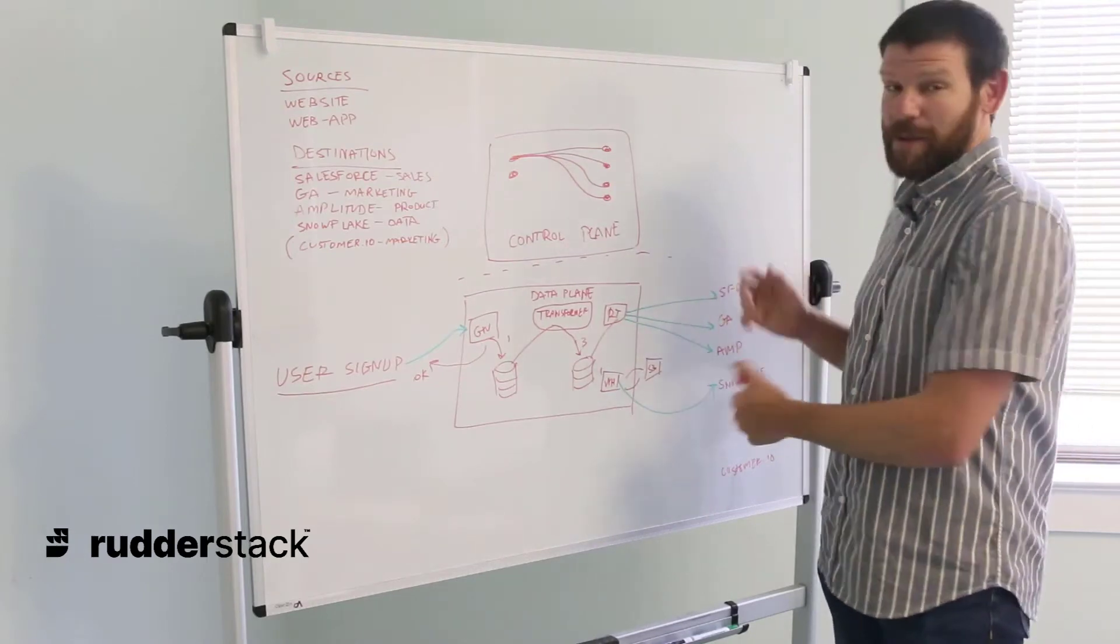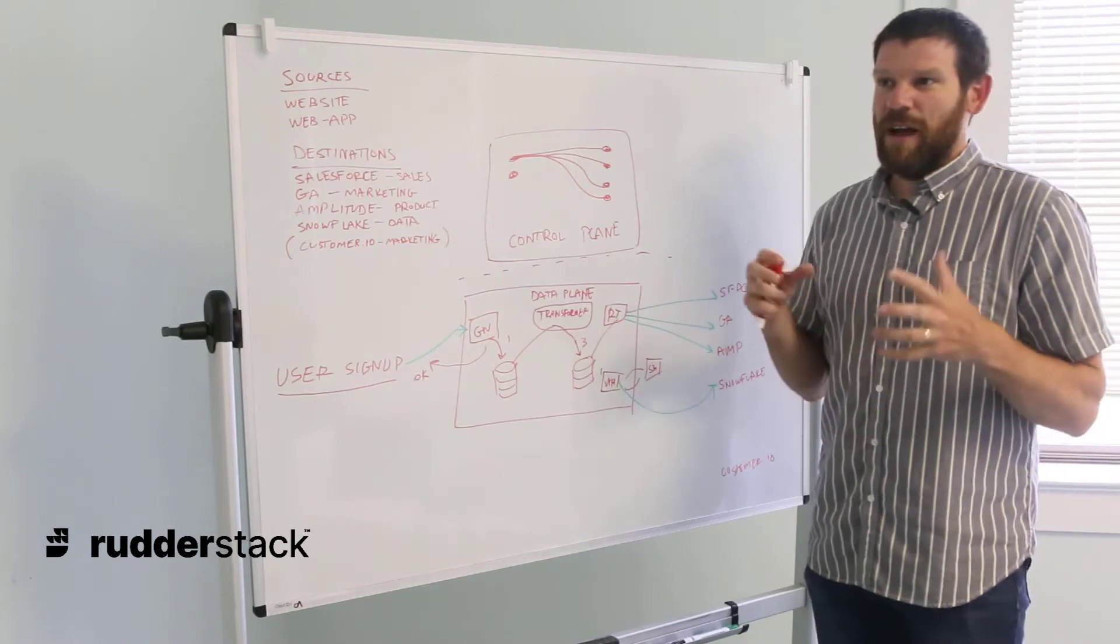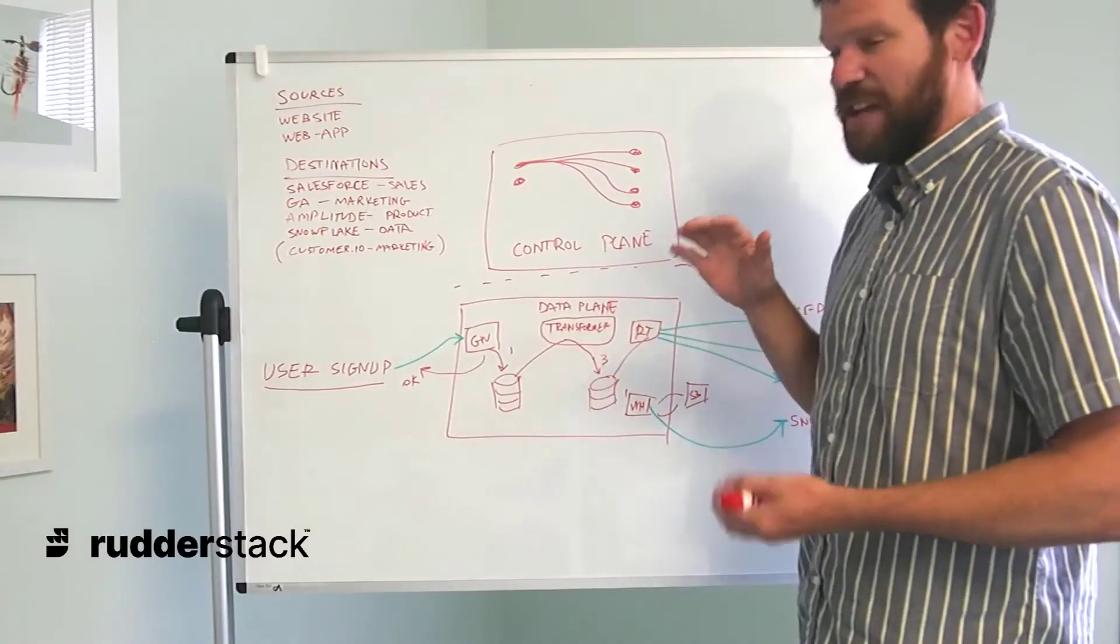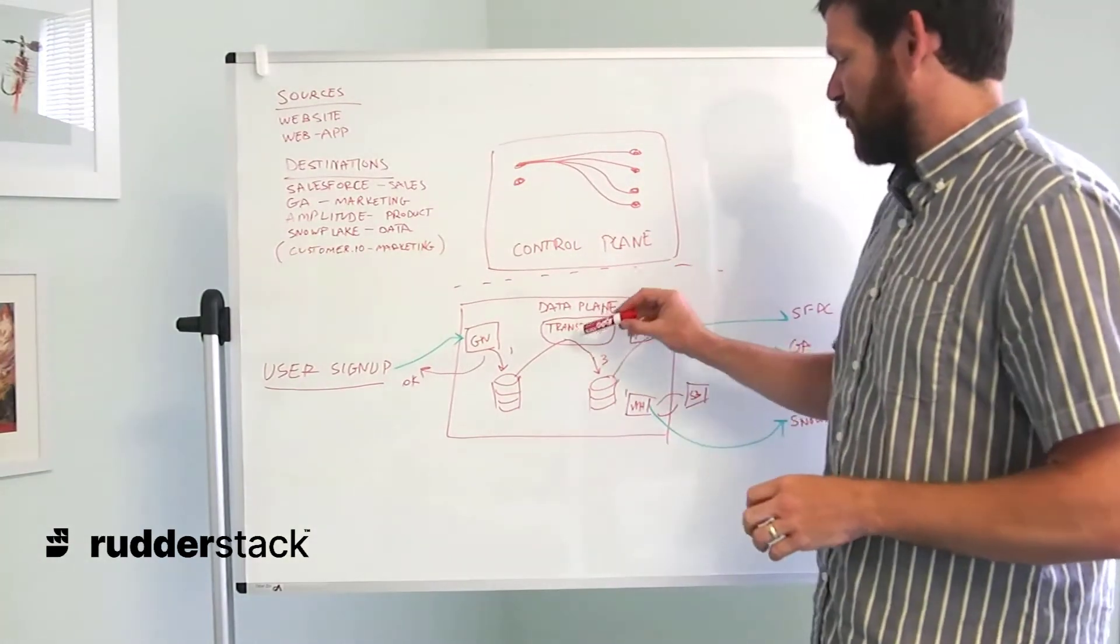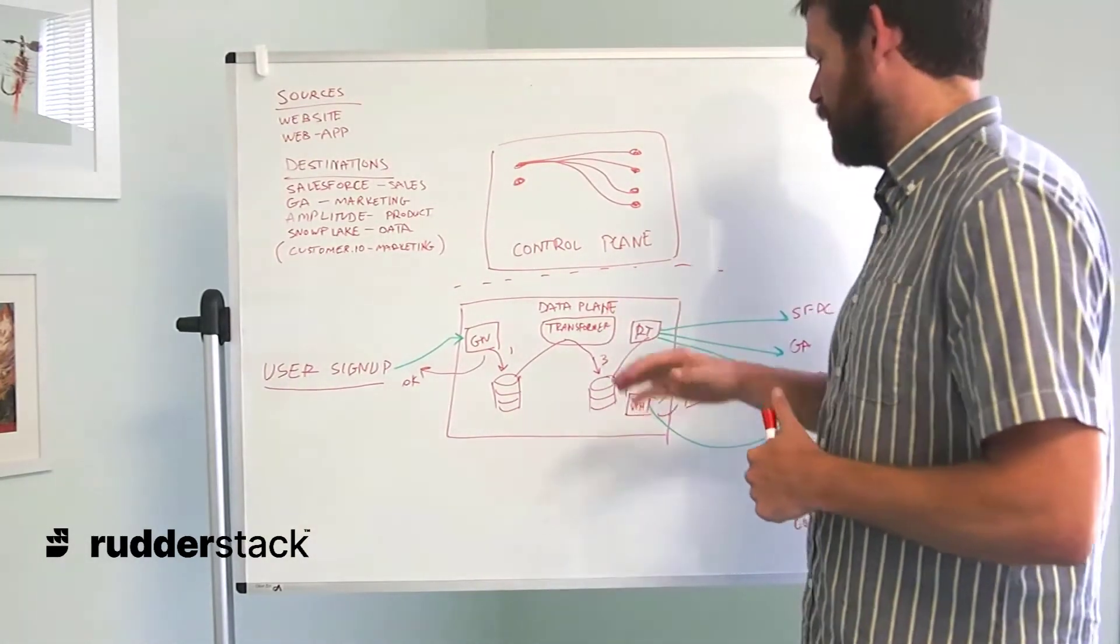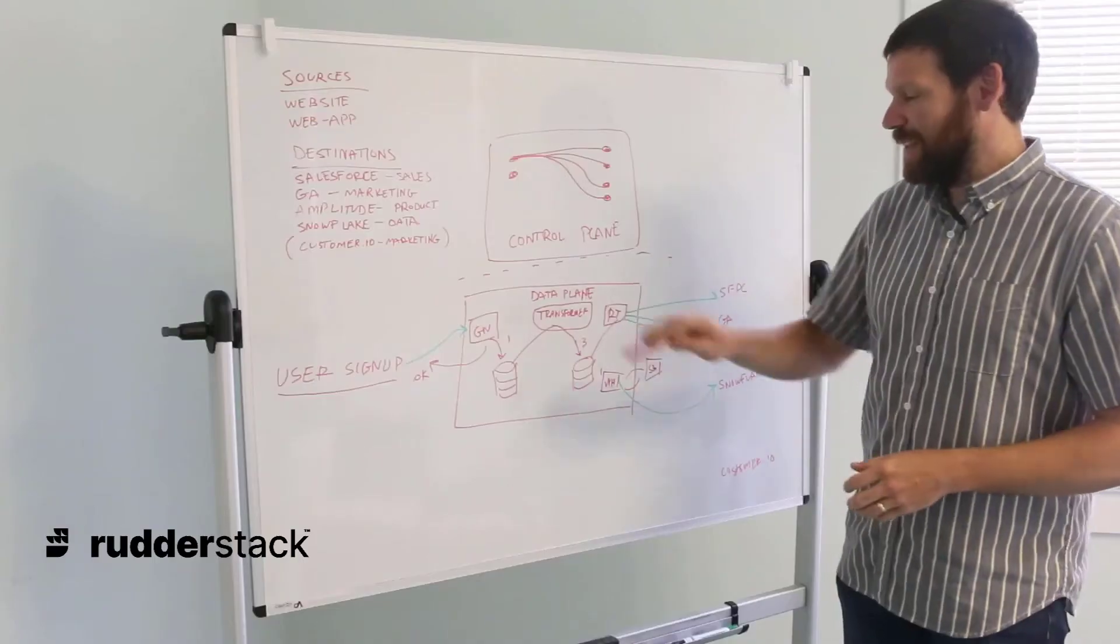User transformations are nothing more than JavaScript functions that process JSON objects. Every event coming into RudderStack is a JSON object, and the custom transformers can be used to do anything you can do in JavaScript to those events as long as we're returning a proper JSON object of an event back.